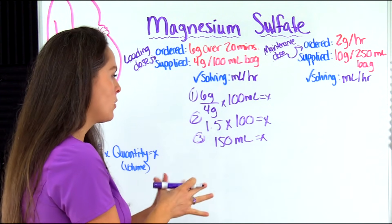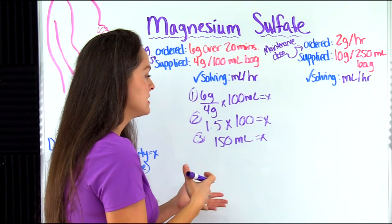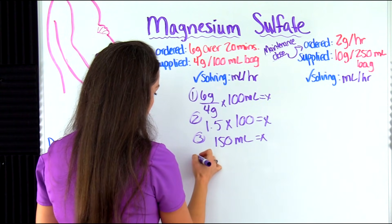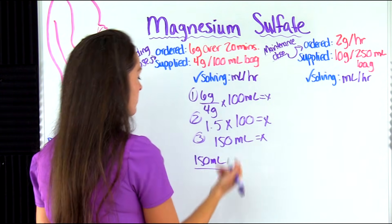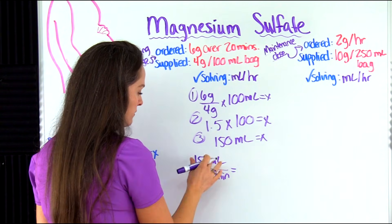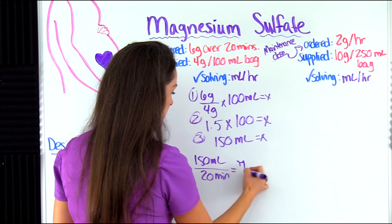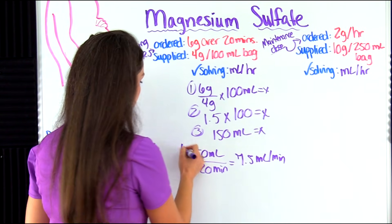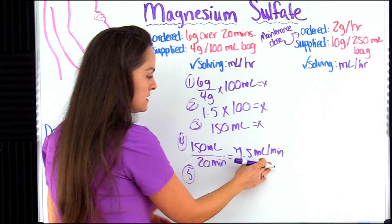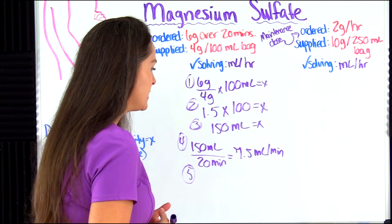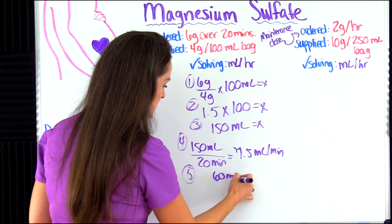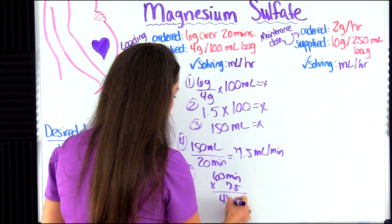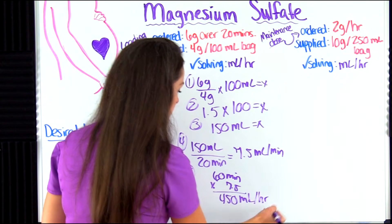We need to take it a step further and find the infusion rate in mLs per hour. Just like the other problem, we take 150 mLs over 20 minutes. Divide 150 by 20 and we get 7.5 milliliters per minute. Then to convert to milliliters per hour, we know there are 60 minutes in one hour. So 60 times 7.5 gives us 450 mLs per hour. That is our loading dose answer.